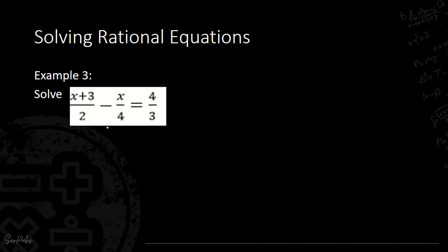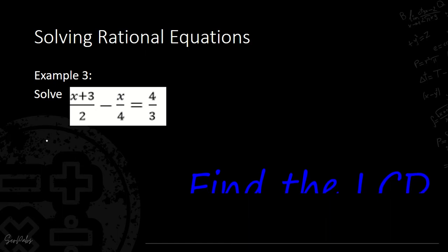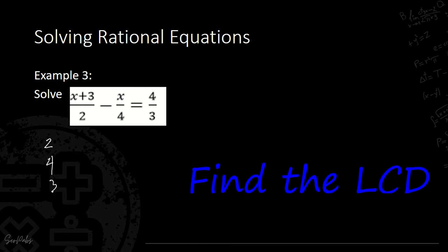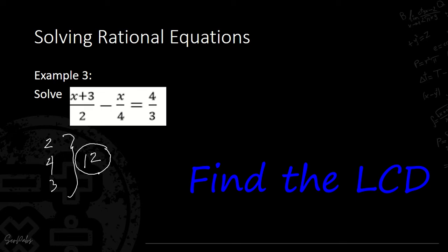Let's proceed with Example 3: (x + 3) over 2 minus x over 4 equals 4 over 3. First, identify the LCD. The denominators are 2, 4, and 3. The common number divisible by 2, 4, and 3 is 12. From practice in junior high school, you can often recognize the LCD quickly — so LCD is 12.